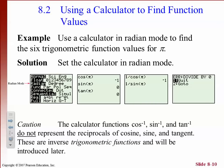Your calculator doesn't have a cosecant or secant button, so for secant you'd use 1 over cosine, and for cosecant you'd use 1 over sine.